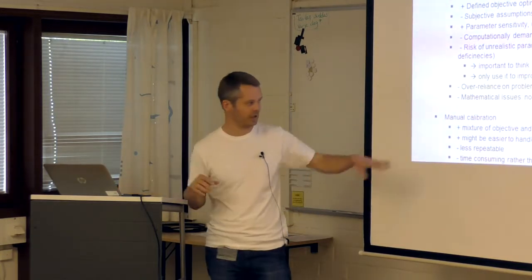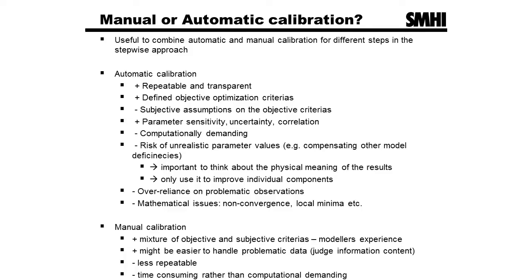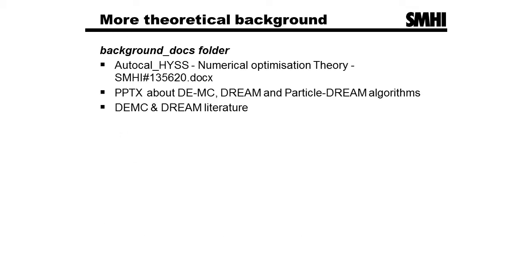On the manual side, it's a mixture of objective and subjective criteria — you include the modeler's experience as well. It's probably easier to handle problematic data; if you can see observation errors, you can disregard them visually. However, it's less repeatable and time consuming rather than computationally demanding — time for you versus time for the computer. There's documentation on numerical optimization algorithms available in the folder, including a PowerPoint on the DEMC method, which is used most of the time in HYPE.